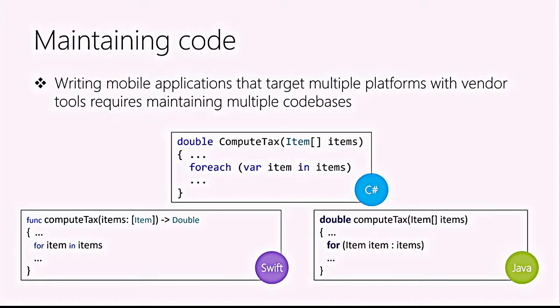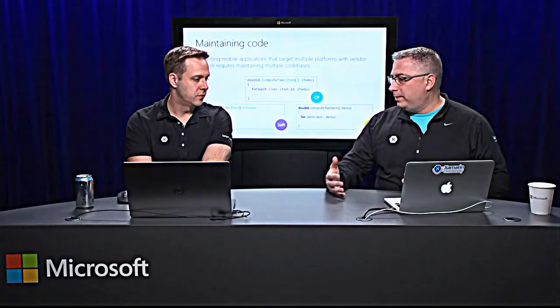Writing code three times means either we take longer or we need multiple development teams each specializing in each language. For example, C#, Swift, and Java each have a slightly different syntax even for something as simple as a for loop — you can't copy-paste this code. Not everyone is an expert in all these languages. If you make a change in one place, you've got to make it in the others, and things come out of sync. Actual production applications will be much more complex.